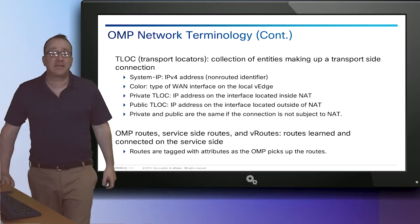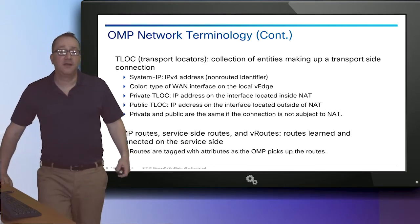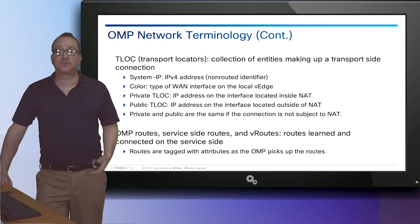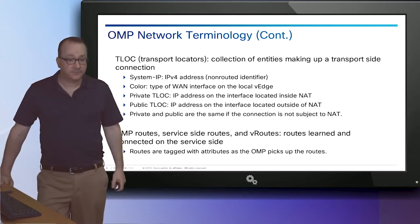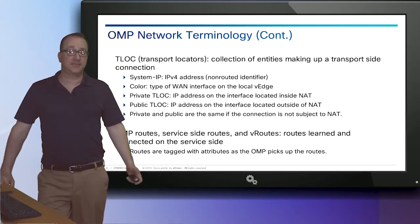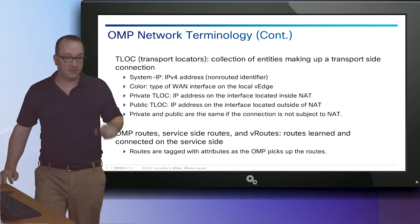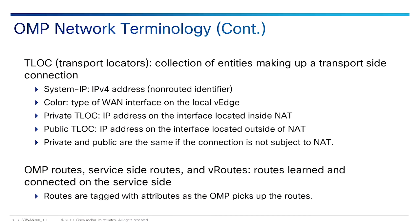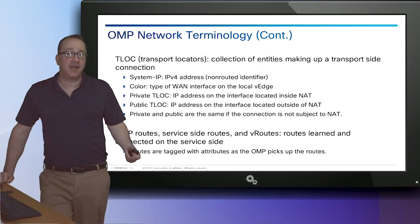We use a color to indicate what type of WAN interface on the V-Edge router we're going to be using. If we want to use MPLS, we label that as an MPLS color. There are predefined colors built into the system — 3G, biz internet, blue, bronze, custom, green, etc. — assigned in the configuration of those interfaces. You can't add additional colors, but colors determine whether a connection is private or public. The encapsulation will be either IPsec or GRE, but it's going to be IPsec most of the time.